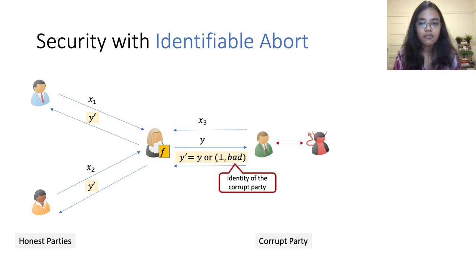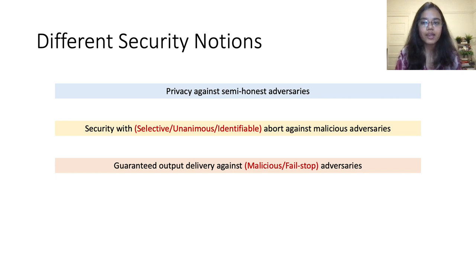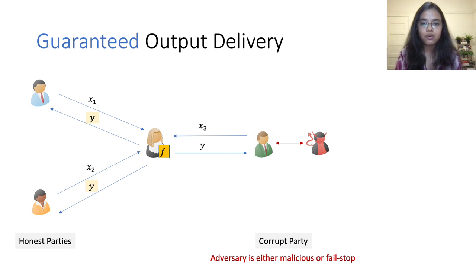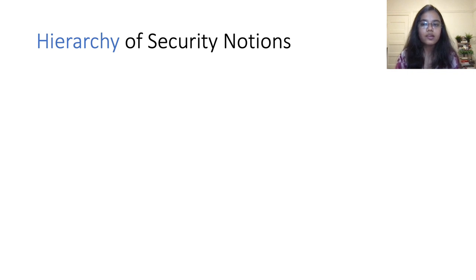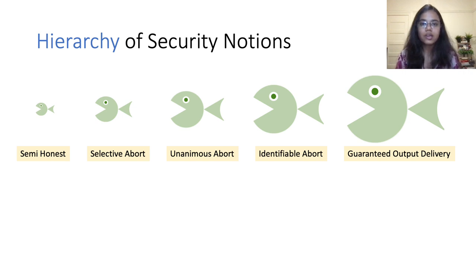In security with identifiable abort, the honest parties not only agree on whether or not to abort, but in case they abort, they are also able to identify at least one corrupt party that caused the abort. Finally, the strongest notion is guaranteed output delivery, where the honest parties are guaranteed to learn the output no matter what, even if the adversary misbehaves. This notion can be considered against full malicious adversaries or against fail-stop adversaries who behave like semi-honest adversaries except that they may prematurely abort. Overall, we have a hierarchy: semi-honest security, then selective abort, unanimous abort, identifiable abort, and finally guaranteed output delivery against malicious adversaries.